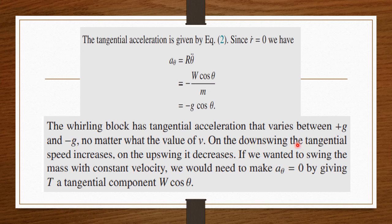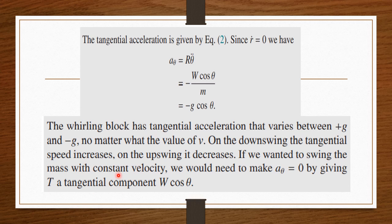On the downswing the tangential speed increases, and on the upswing it decreases. If we want to swing the mass with a constant velocity, we need to make aθ zero by providing a tangential component equal to w cosθ. By making aθ = 0 we can achieve constant velocity. In the first example gravity was assumed zero; in this second example we considered the gravitational field and found how it affects the string motion.